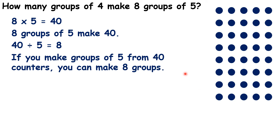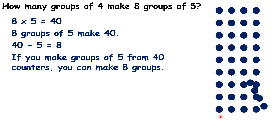But we haven't answered our question yet. All we know is that with eight groups of five, we have forty counters. Let's move our counters around so that instead of putting them in groups of five, we have four counters next to each other. So we have our counters in groups of four. So, how many groups of four do we have?